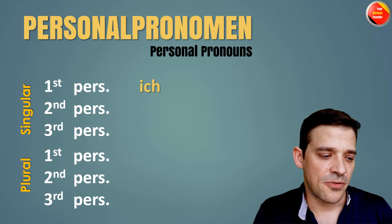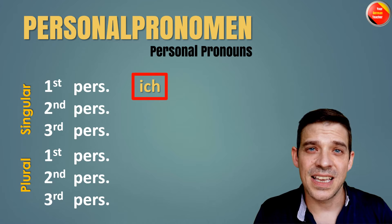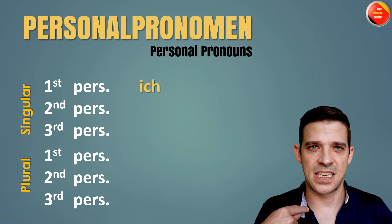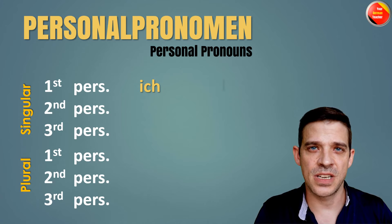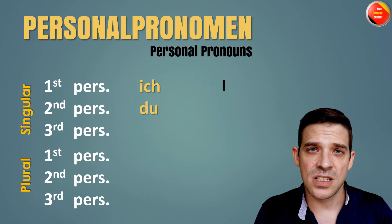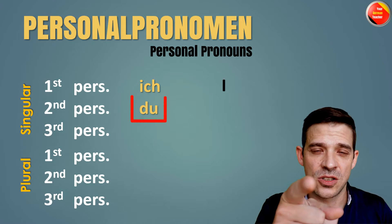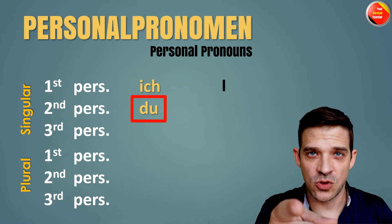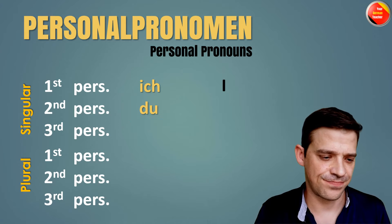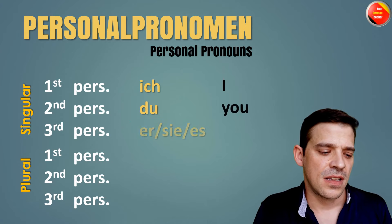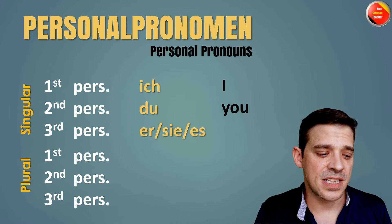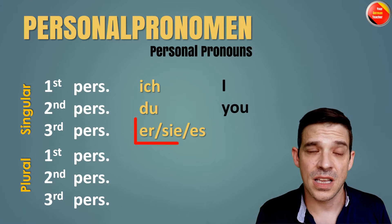The first personal pronoun is 'Ich'. Ich in German is 'I'. The second one is 'Du'. Du is 'You'. The third person singular is 'Er'.